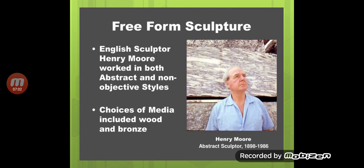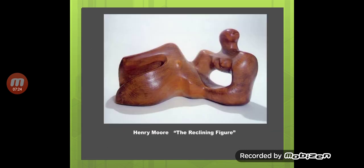As far as free-form sculpture is concerned, Henry Moore — an abstract sculptor, 1898 to 1986 — was an English sculptor who worked in both abstract and non-objective styles. His choices of media include wood and bronze. He used both abstract and non-objective styles and used wood and bronze as materials to present his ideas. His 'Reclining Figure' is a very famous sculpture, and you can see an image of it on the screen.